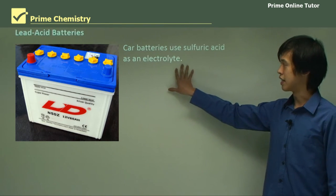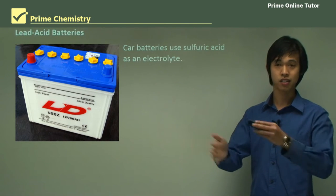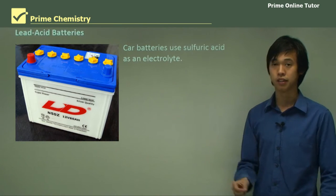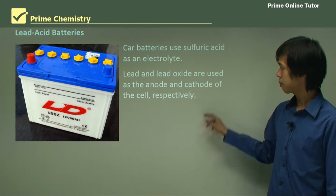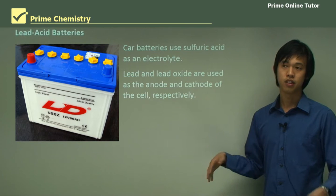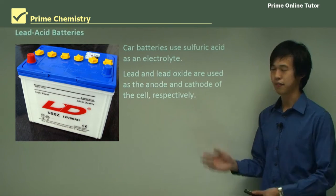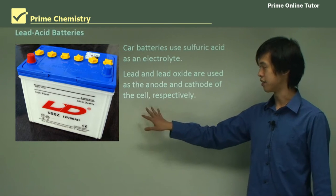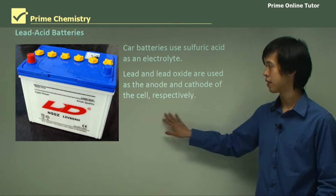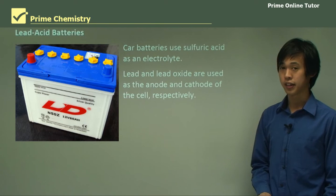We use sulfuric acid as an electrolyte in the lead acid cell, allowing charges to move and participating a little in some reactions. Lead and lead oxide are used as the anode and cathode of the cell respectively. You've seen this in production of materials if you've studied the lead acid cell — it's very similar to the dry cell.